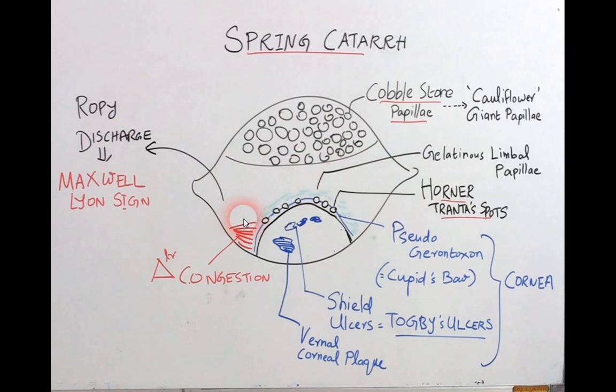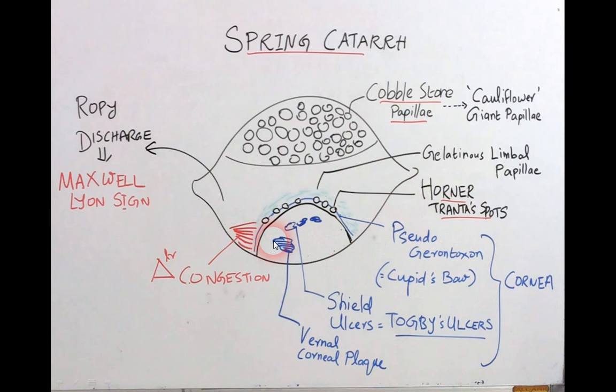You can observe triangular congestion with some blood vessels only in these specific areas. The clinical features of spring catarh include itching in general and a ropy discharge — the sign is called Maxwell-Lyon sign. A bluish line over the cornea is called pseudogerontoxone, also known as Cupid's bow — it resembles arcus senilis but is false. Over the cornea, you can observe ulcers called shield ulcers, specifically named Togbe's ulcers. Vernal corneal plaques are also seen.